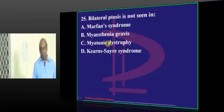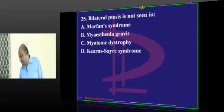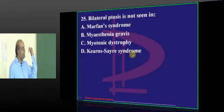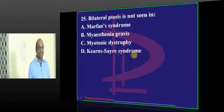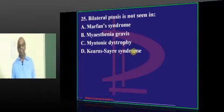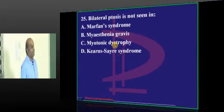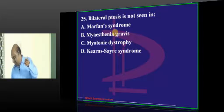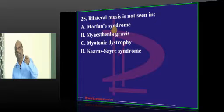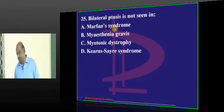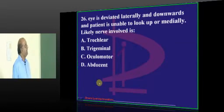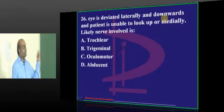Myotonic dystrophy is the answer. Most people, as expected, said morphine. In morphine, we do not see ptosis — ptosis is an eyelid finding. Lenticular dislocation may occur, but in morphine you don't find ptosis, or lateral downward gaze with inability to look up or medially.